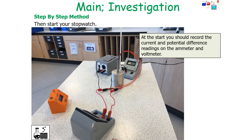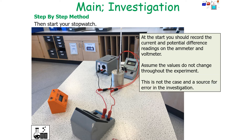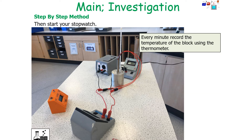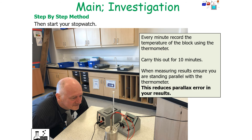Start your stopwatch, recording the current and potential difference readings on the ammeter and voltmeter. We assume that the values don't change throughout the investigation, though obviously that's not the case and is a source of error. Every minute, record the temperature of the block using the thermometer and carry it out for 10 minutes. When you measure results, ensure you stand parallel with the thermometer as it reduces parallax error in your results.